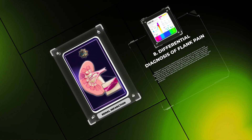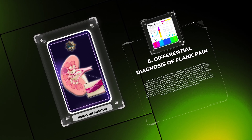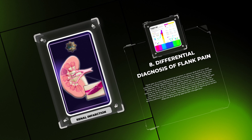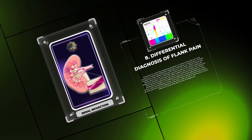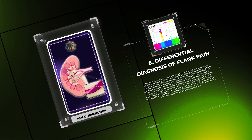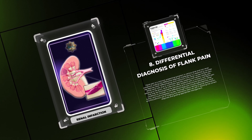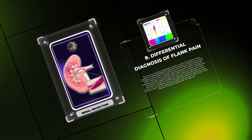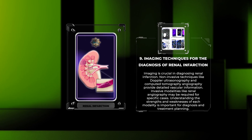Flank pain is a common presenting symptom in various renal and non-renal conditions, making differential diagnosis challenging. While renal colic due to urolithiasis typically presents with severe colicky pain radiating to the groin, renal infarction often presents with constant dull flank pain accompanied by hematuria and constitutional symptoms. Other conditions to consider include pyelonephritis, renal tumor, and musculoskeletal causes. Thorough history taking, physical examination, and judicious use of imaging and laboratory tests can aid in reaching the correct diagnosis.